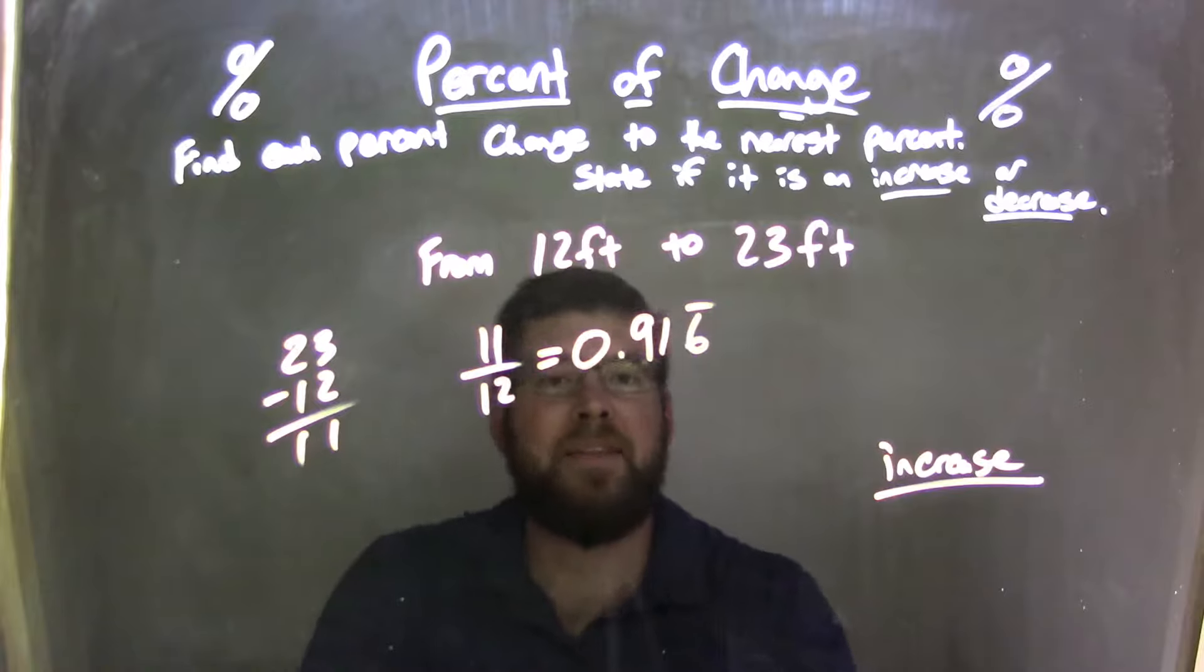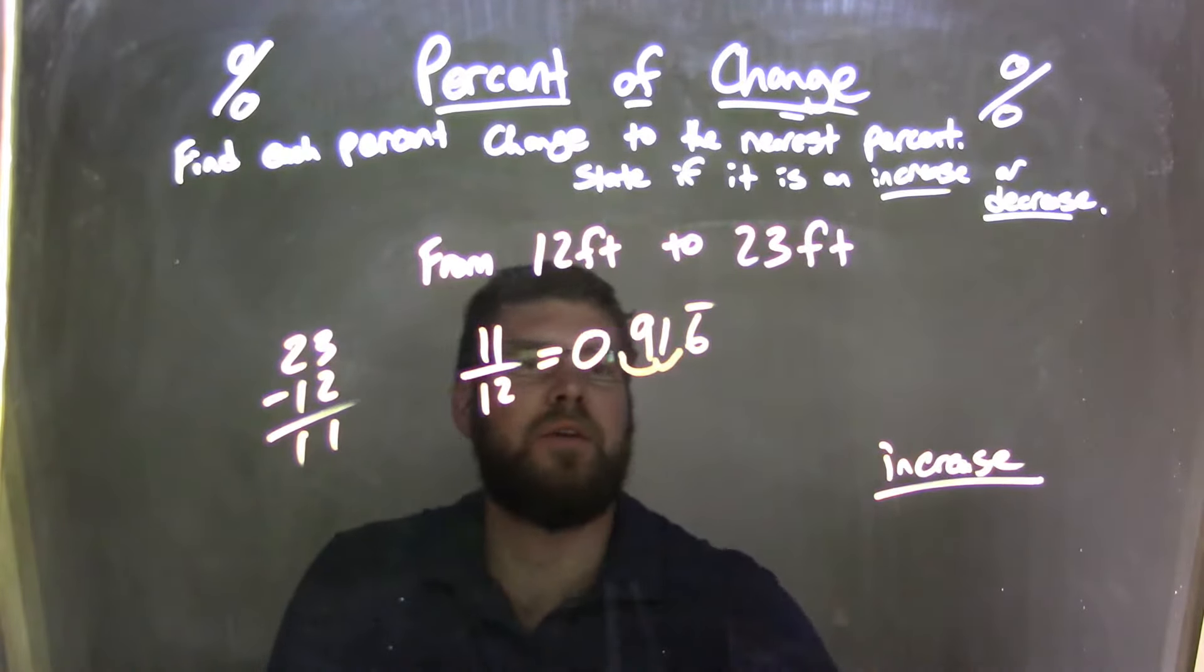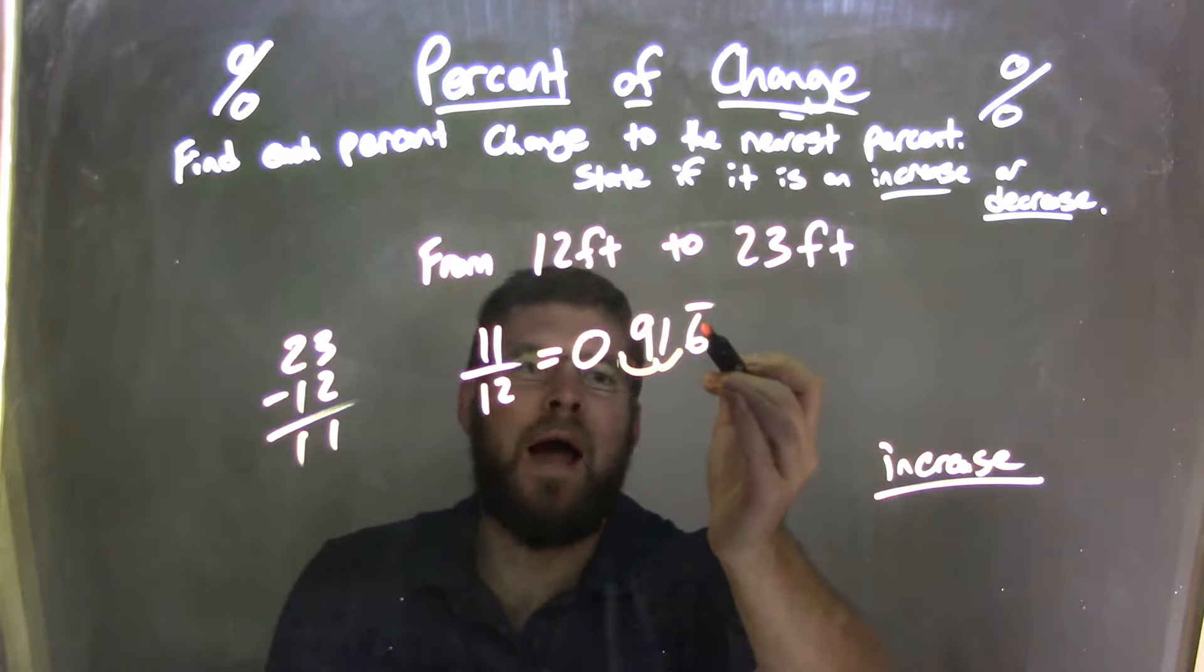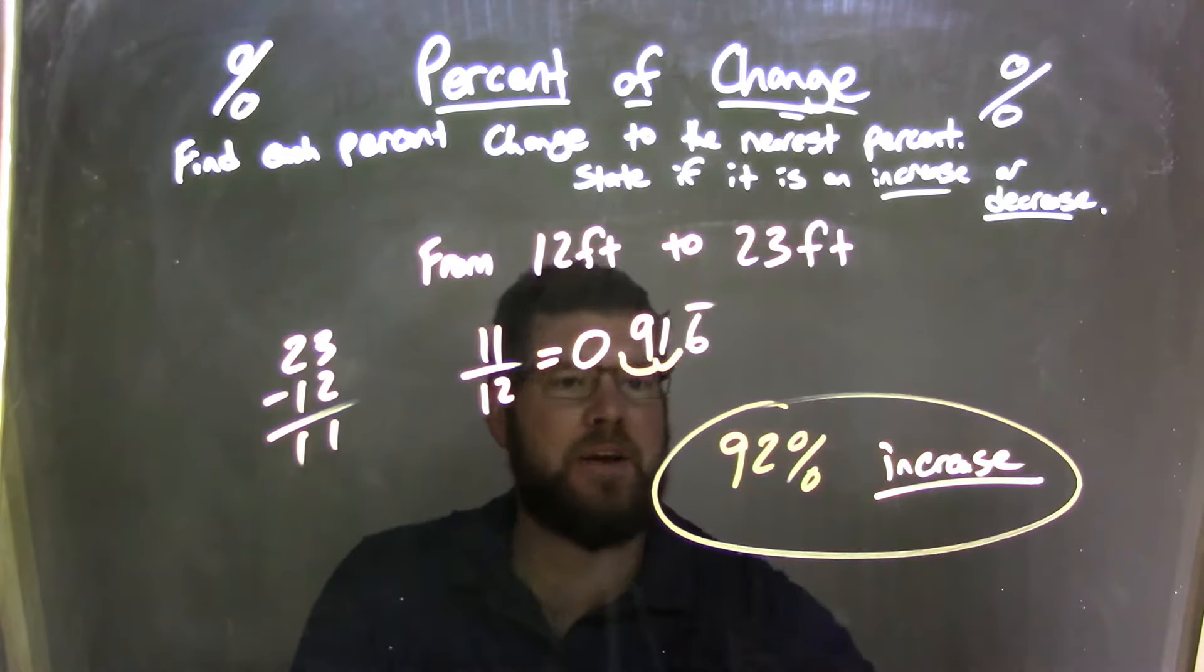We need to make that into a percent. Moving the decimal two places, we have 91.6 repeating. That 0.6 repeating will round that 1 up to a 2, so we have a 92 percent increase.